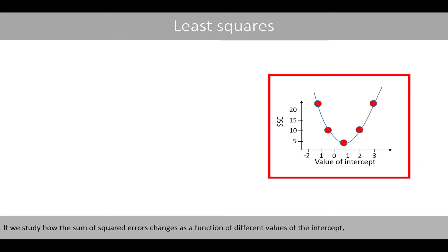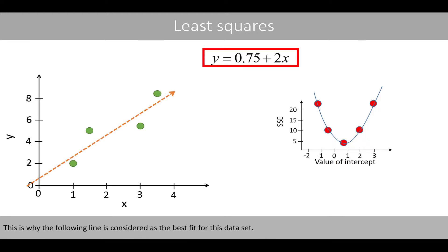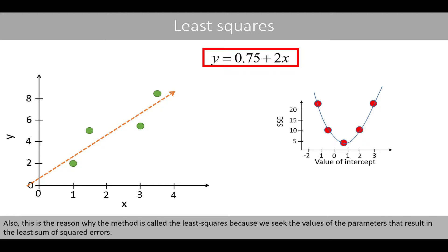If we study how the sum of the squared errors changes as a function of different values of the intercept, we see that the value that minimizes the sum of the squared errors is 0.75. This is why the line with intercept 0.75 is considered the best fit for this data set. This is also the reason why the method is called least squares — because we seek the values of the parameters that result in the least sum of squared errors.